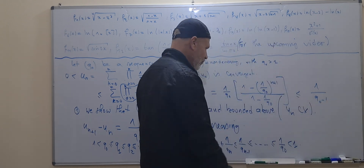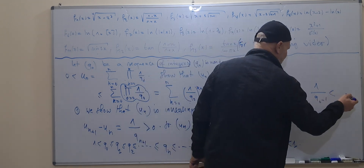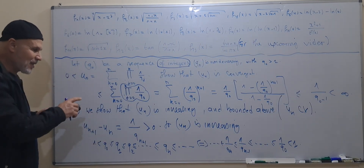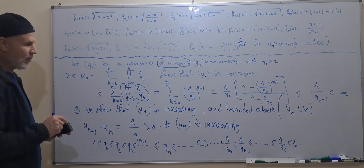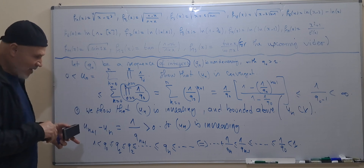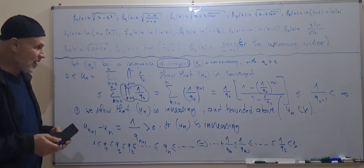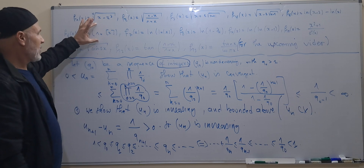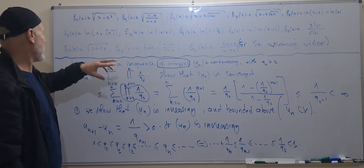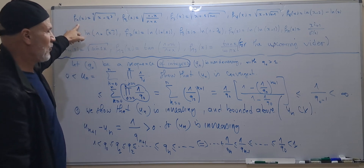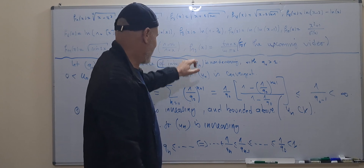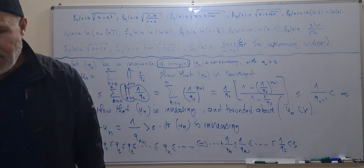So u_n is less than or equal to one divided by q_0 minus one, which is the final bound. This means u_n is increasing and bounded above, hence it is convergent. Thank you very much. See you next time — it will be the domain of definition of functions from f_1 through f_13.